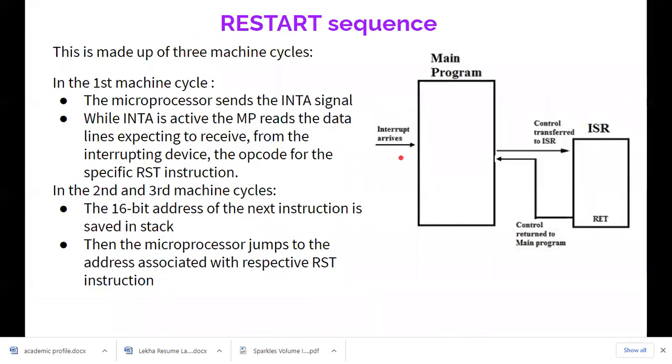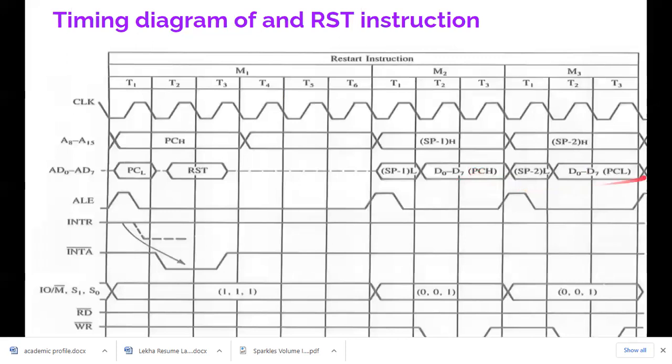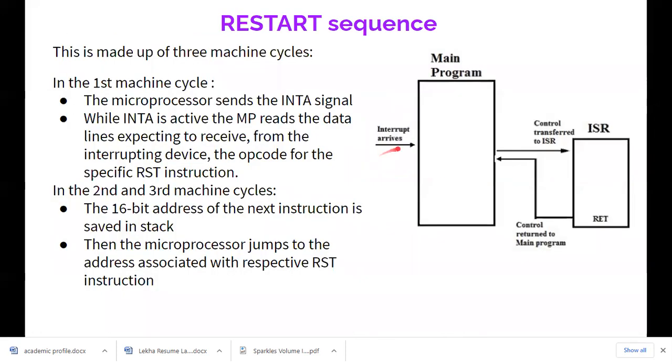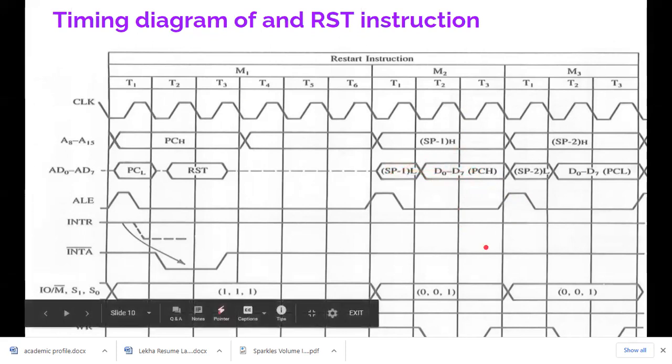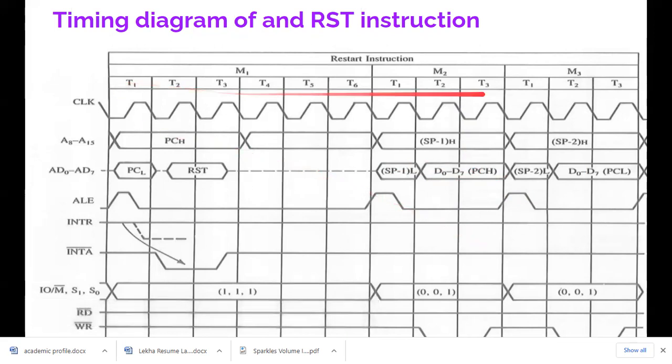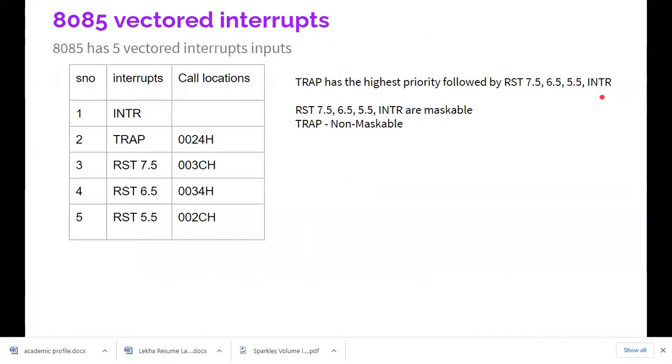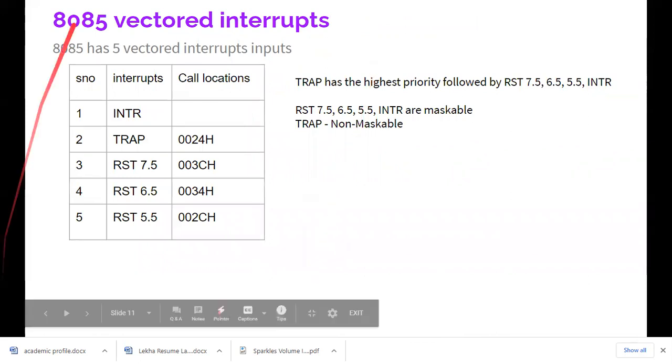In T2 of M3, the lower order is placed in M2 and the higher order is placed in M3. Once it is placed it will be pushed into the stack. This is the timing diagram of an RST instruction, and this is why it needs three machine cycles.